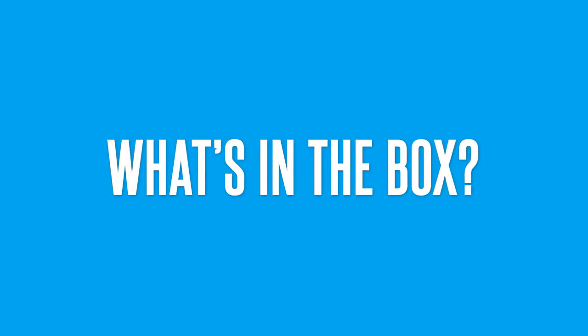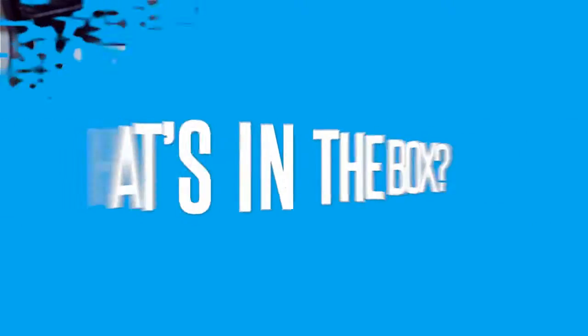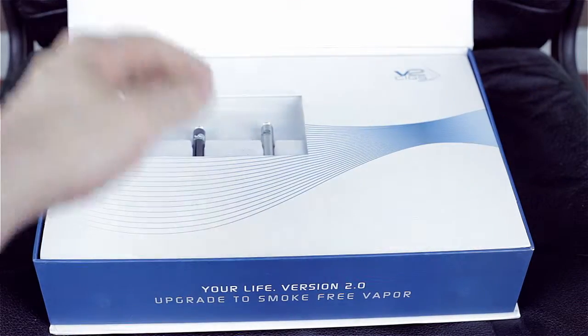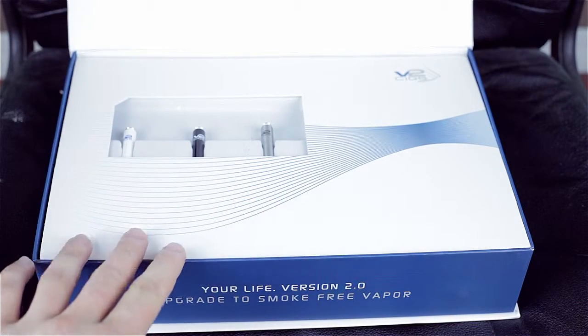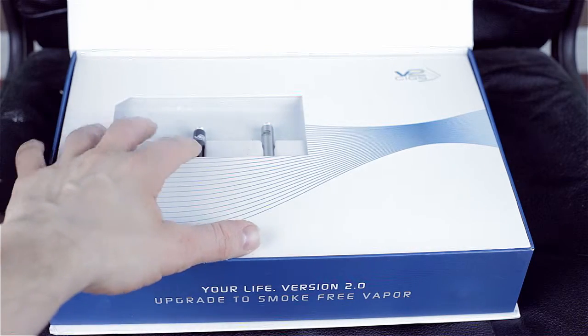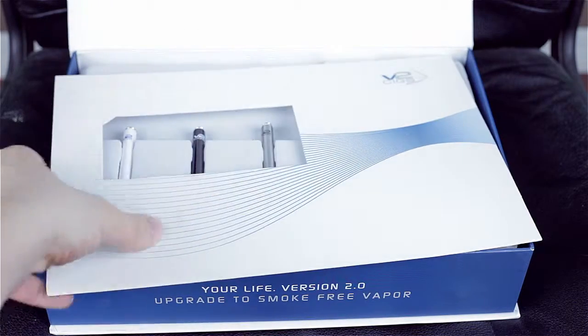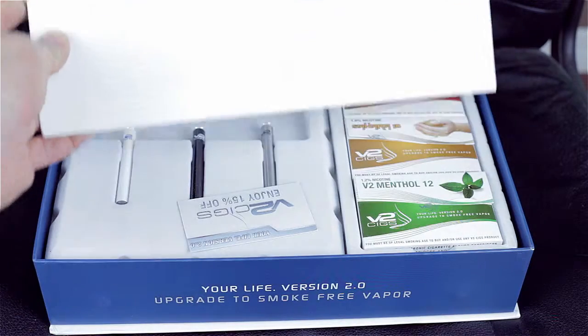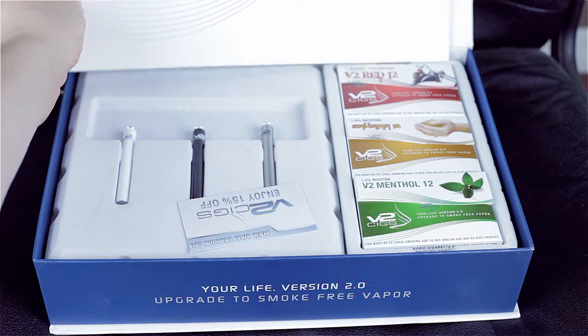What's in the box? This is the V2 Cigs Ultimate Kit, pretty much the big boy of electronic cigarette kits. It runs $179, but you can usually find a coupon code to get 10 or 15% off. We'll make sure to include any current coupon codes in the body of this post.